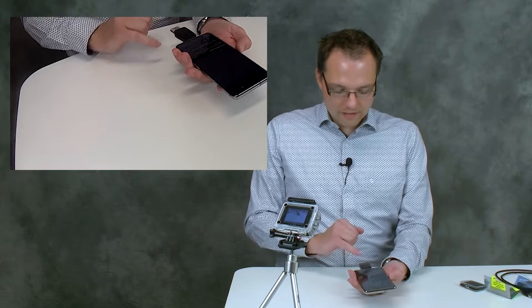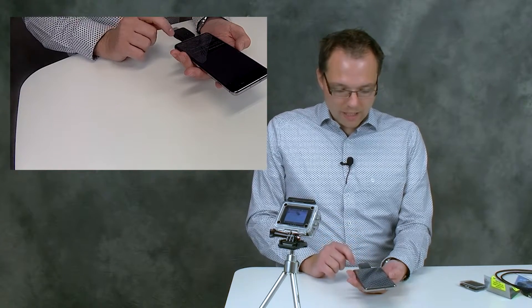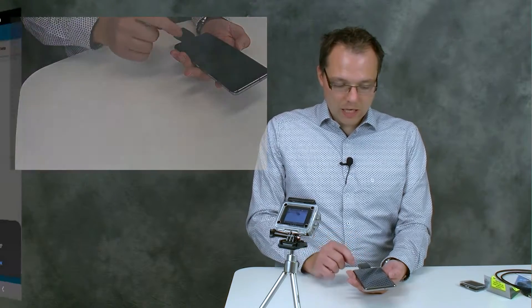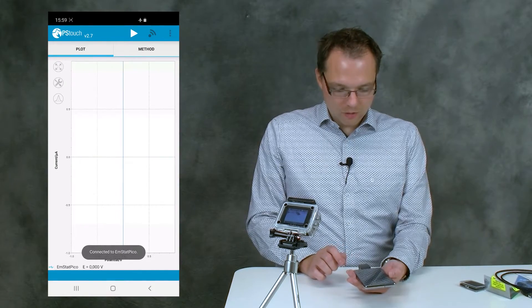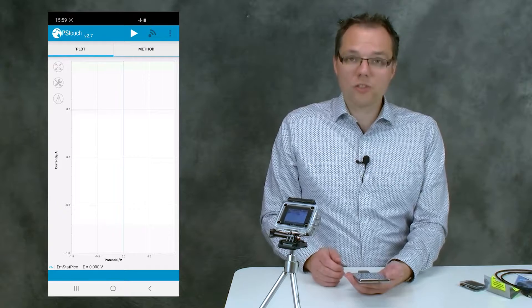That means that it is powered and working as expected. Now the phone will ask you for permission to use the device. You just press OK, and then you see that it's connected by the little message that pops up.